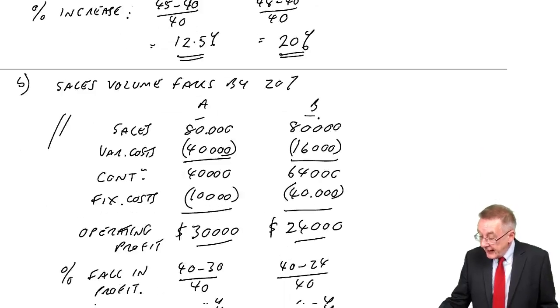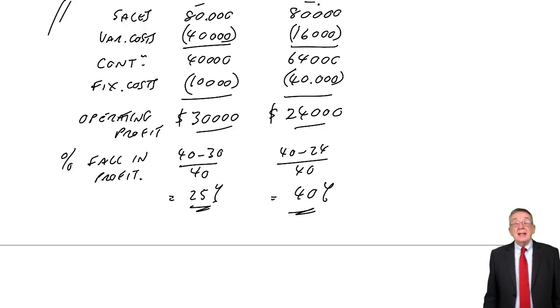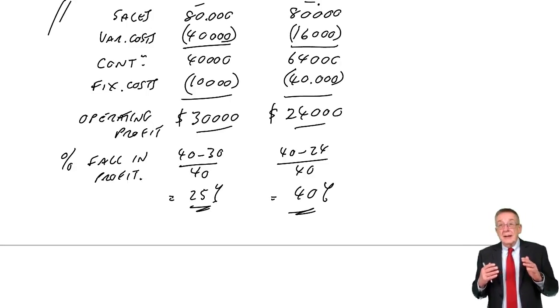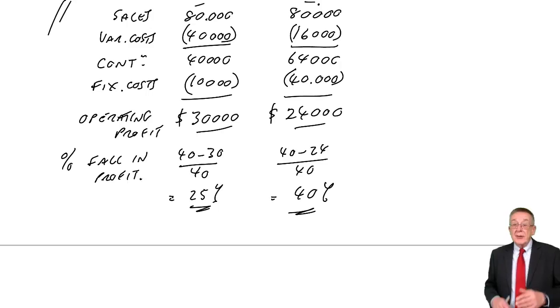But I hope I made the point, fixed costs of any nature make things more risky. And the two different reasons. One is here, the way you structure your running costs, your operating costs. Do you pay fixed salaries? Do you pay people by the day? Variable fixed. The other reason of having fixed costs is the way you raise your finance. The more you raise from debt borrowing, the more fixed interest, the more risk to the shareholders.